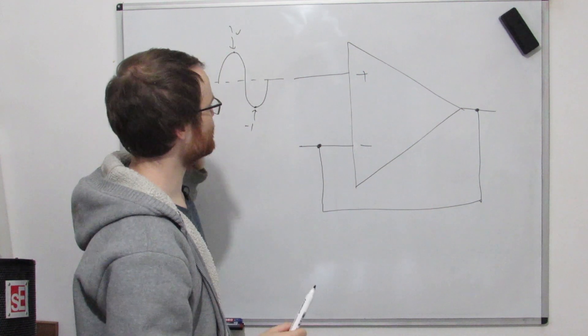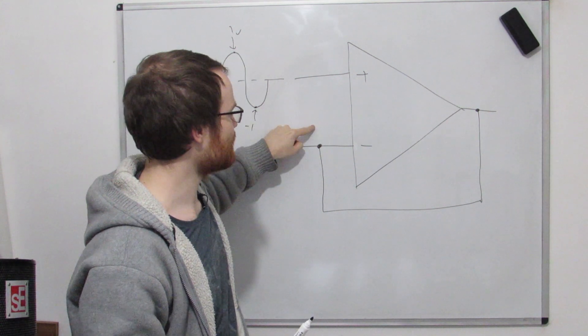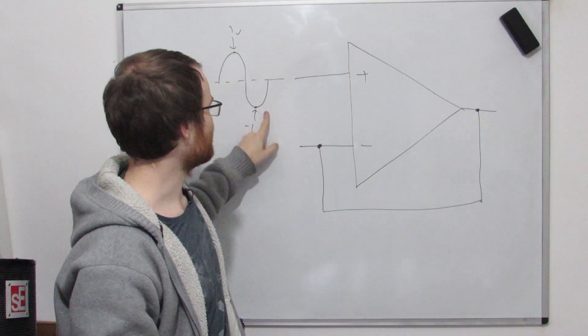That's why we call this a follower, because if you follow, if you think the circuit through, if this is one volt, this wants to be one volt, there's no circuitry here, so the output just needs to be one volt. So minus one volt.